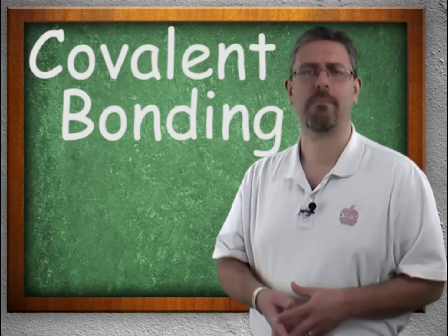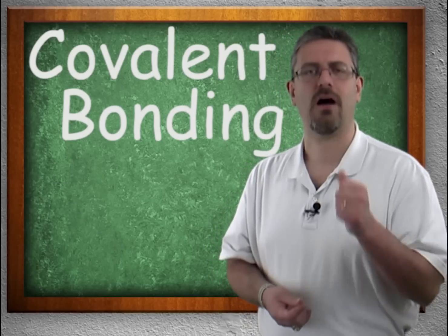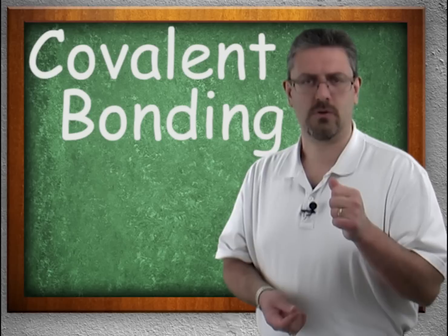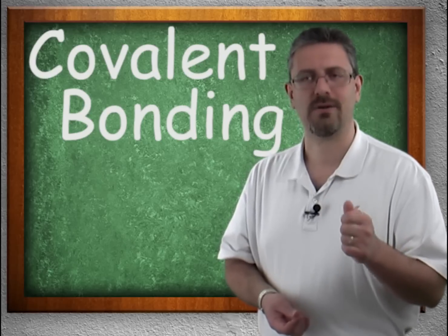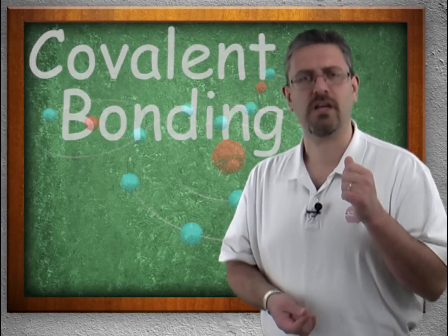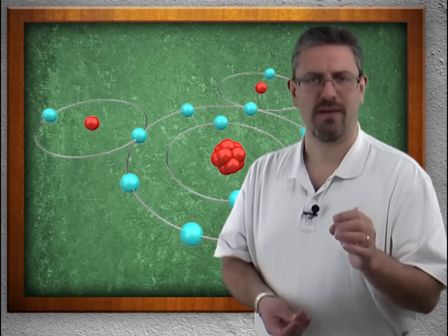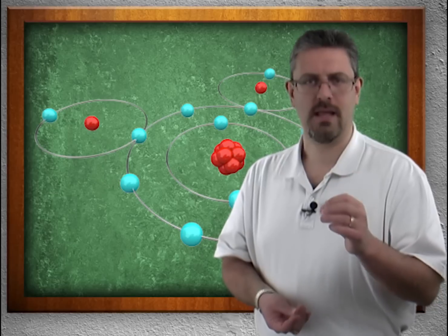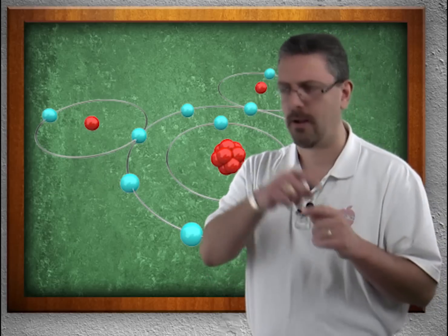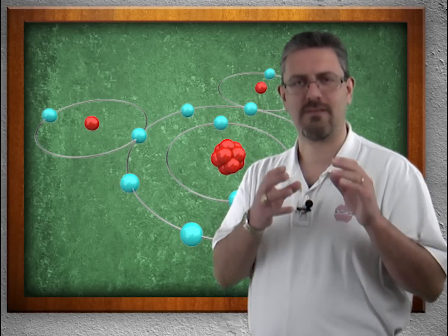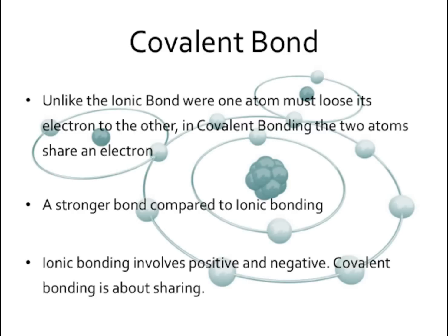Covalent bonding is the other type of bonding, and it's a much stronger type of arrangement. In covalent bonding, it's not a matter of one atom losing or gaining an electron — it's a matter of sharing. Atoms come together by sharing electrons; they actually fly in each other's orbits and share the electron. This is a very strong bond. Unlike ionic bonding, which involves positive and negative attraction, covalent bonding is about the sharing of electrons.